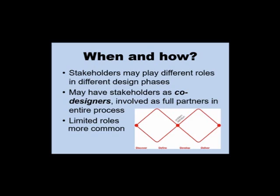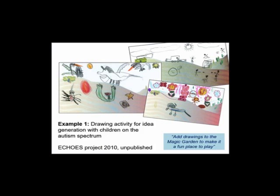Talking about different roles and different levels of participation can be quite abstract, so it would probably help to have an example. Let's look at a couple of different forms of participation in a project from my own research area, which was the ECHOES project creating a virtual environment for children with autism. Early on in the project, still exploring the problem space and what the technology might be like and what it might do, there were a number of activities with children on the autism spectrum trying to explore their ideas around play, fantasy, and magic. Here are a few examples from a drawing activity that asked them to add things to a magic garden location to make it a fun place to play.